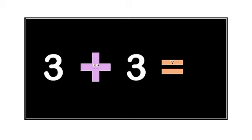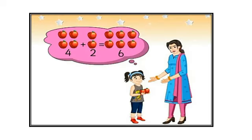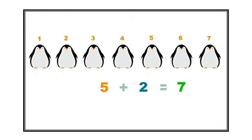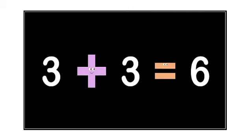At last, I am giving you the answers — but don't cheat. See them only when you have done your own answers. The first answer: Neha has four apples, her mama gave two more, so the total is one, two, three, four, five, six — she has six apples. The second answer: five plus two is equal to seven. And the last answer is three plus three is equal to six.